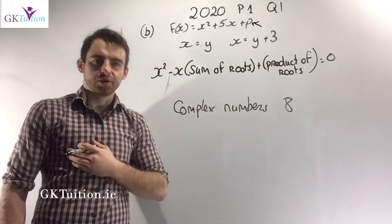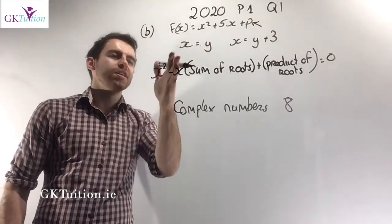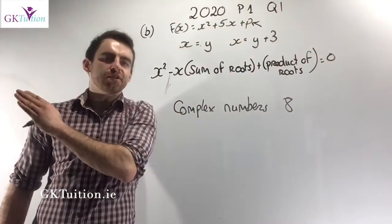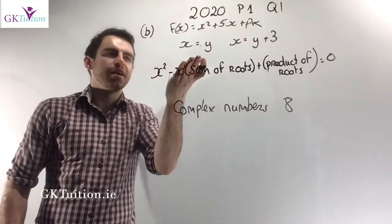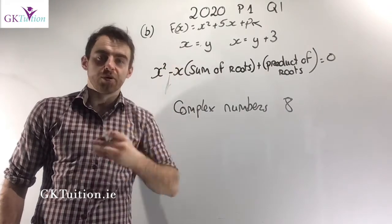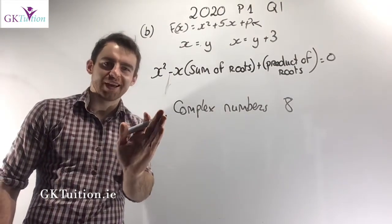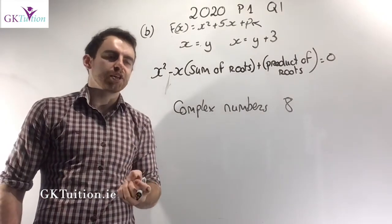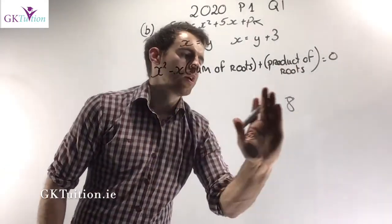One way of doing this: if you know x equals y is a root, you get x minus y as a factor. If x equals y plus 3 is a root, you get x minus y minus 3 as a factor, and multiplying the two factors gives the quadratic. However, the easiest way to do this question uses theory from the 8th tutorial on complex numbers — every quadratic can be written in the form x squared minus x times the sum of the roots plus the product of the roots.